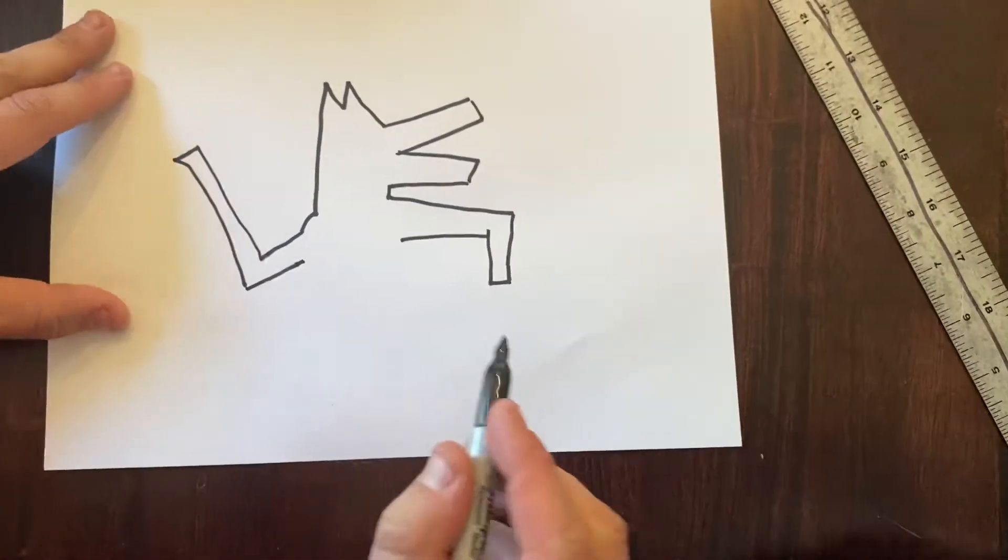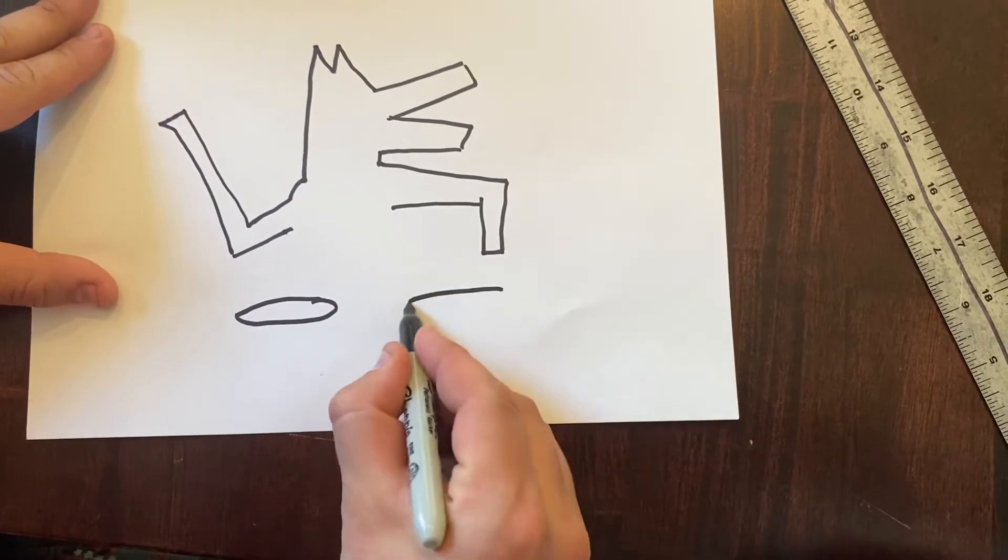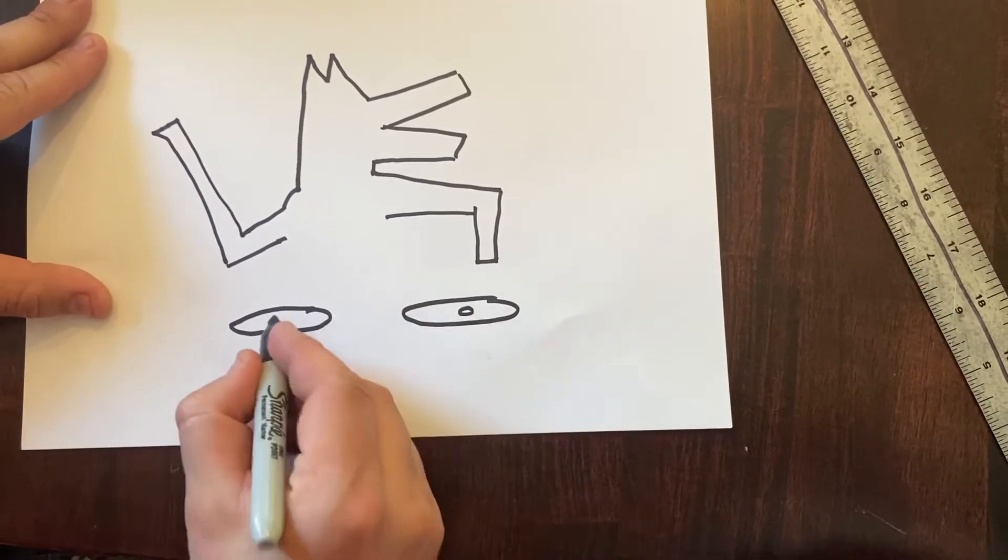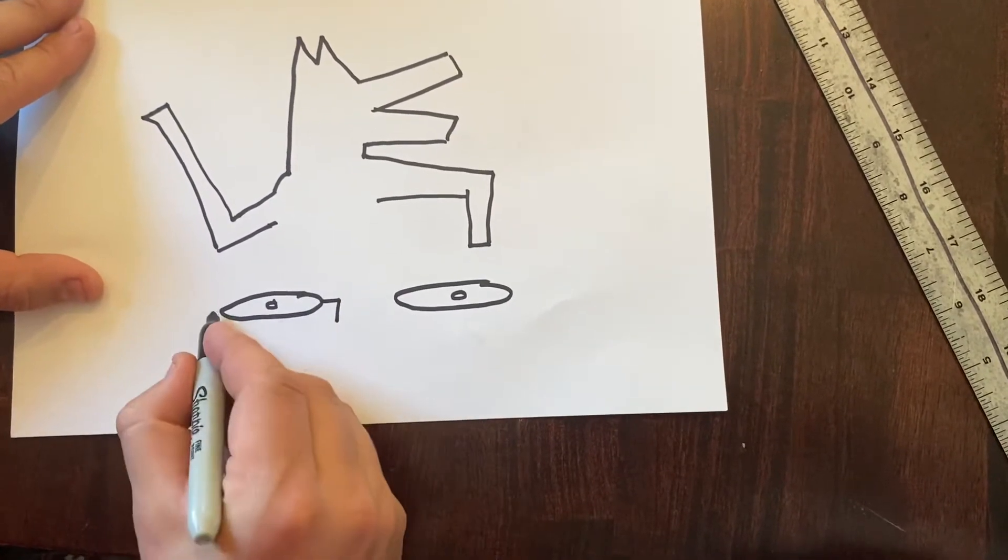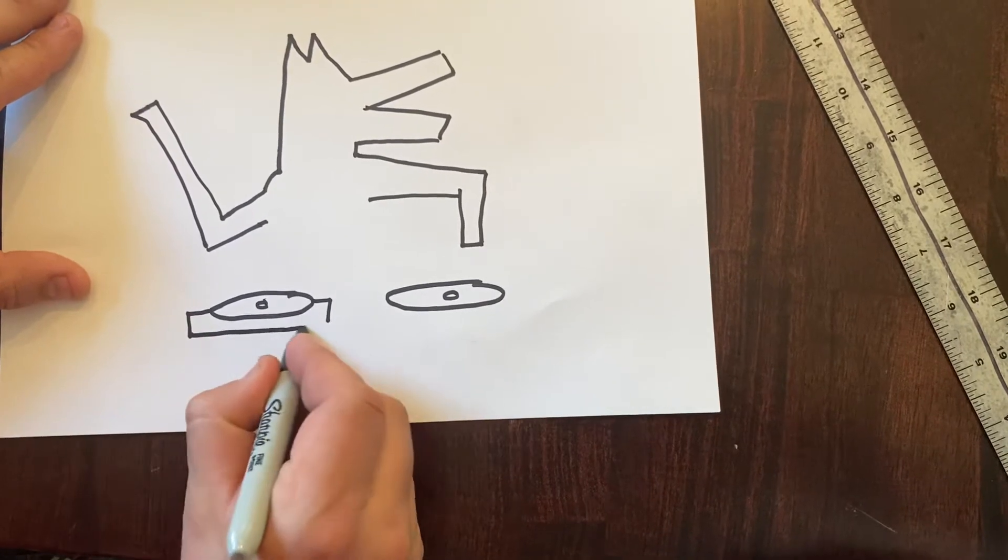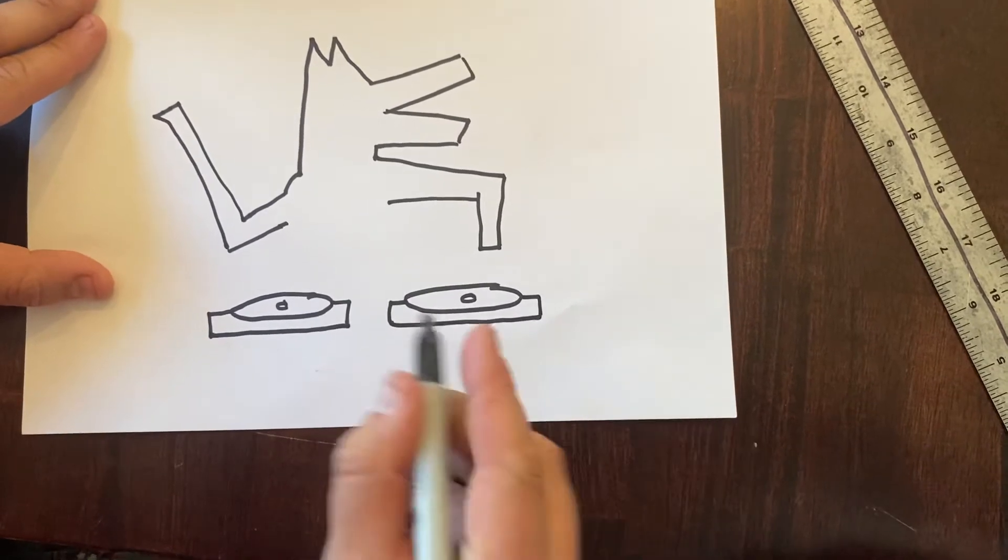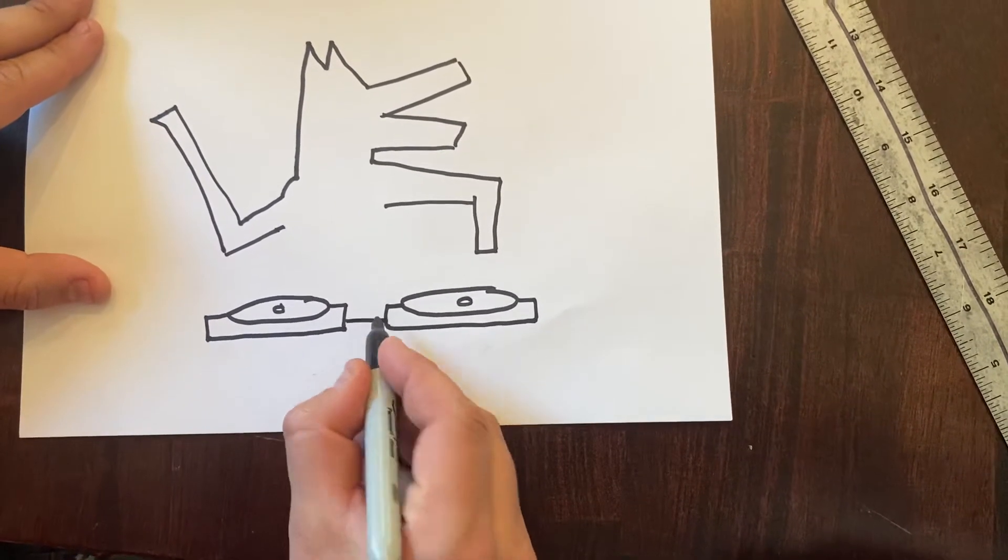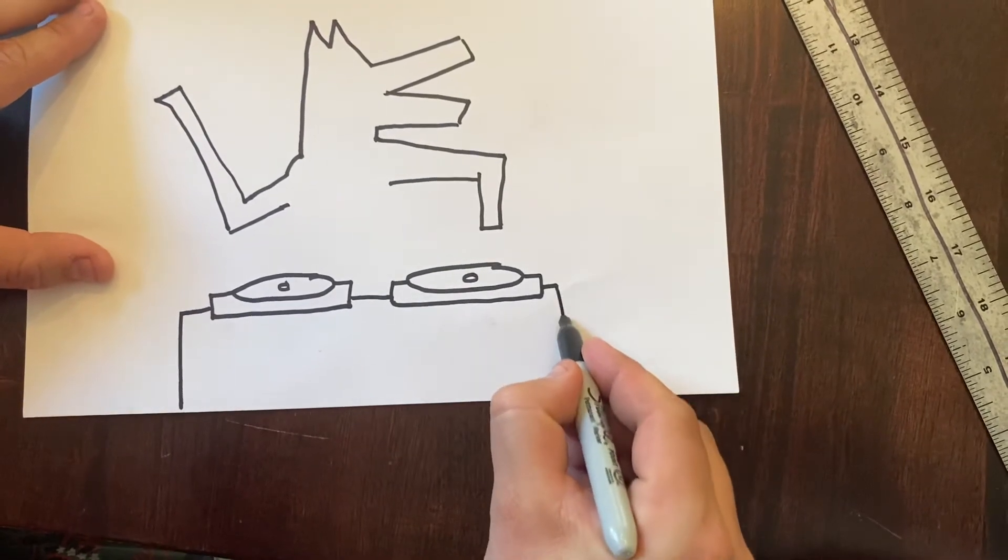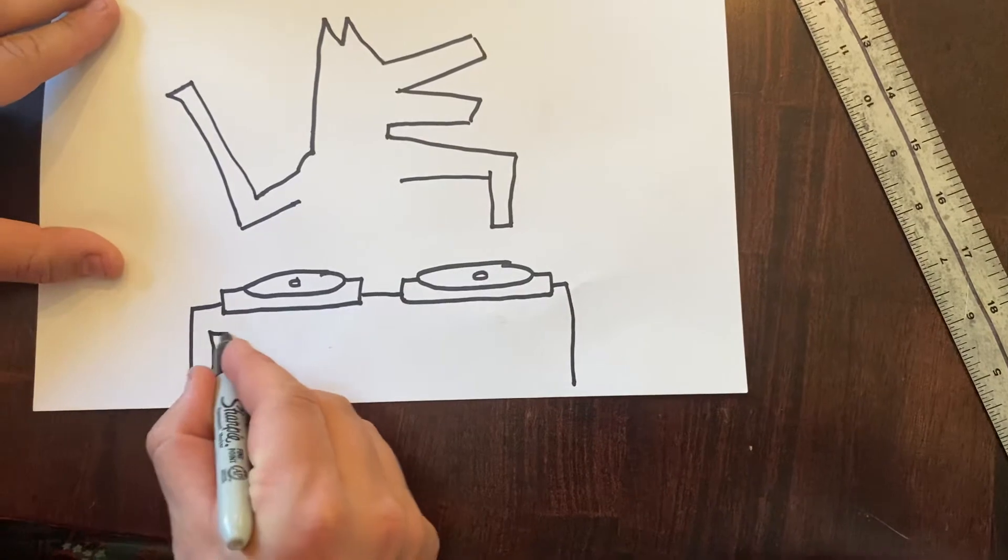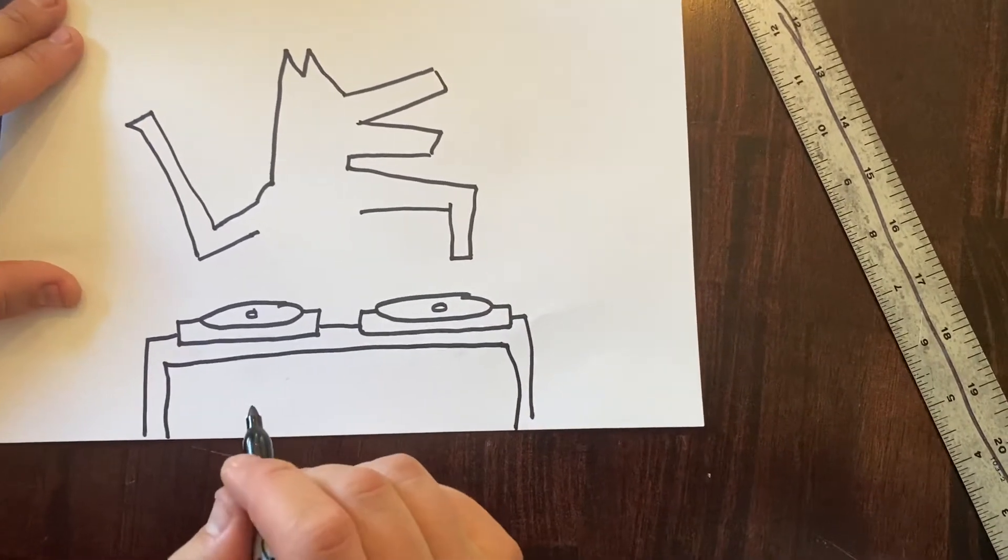Now we're going to add our record table. We're going to start by making two ovals, put two smaller ovals in between. I have the turntables underneath, very simple. We'll have the table underneath that. Cool.